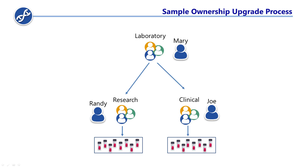Then remove Joe from any other group. That way, Laboratory would have restricted access to the new group's samples, and thus Joe's, but not Randy's.